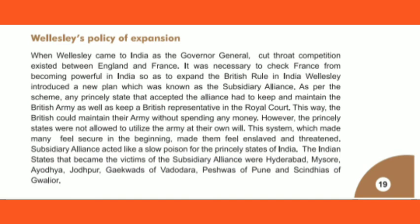However, the princely states were not allowed to use the army until the Britishers gave permission. This system, which people thought was good, later turned out to be a trap. The Subsidiary Alliance was a slow poison that corrupted all the states. The victims included Hyderabad, Mysore, Ayodhya, Jodhpur, Kaikwad of Vadodara, Peshwa of Pune, and Scindia of Gwalior.